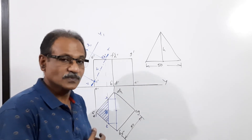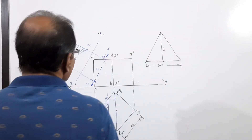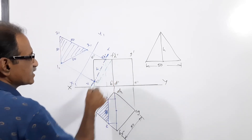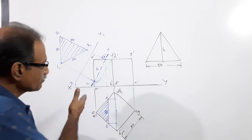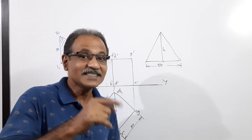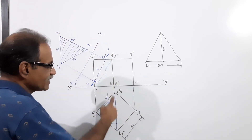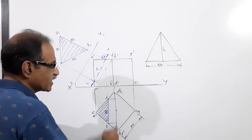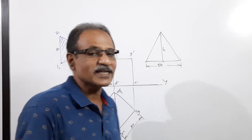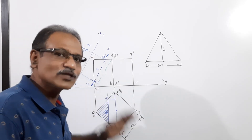Now there is another option — listen carefully. If you draw a cutting plane connecting A' to F' to H', what do you get? If the cutting plane passes through A', F', and H', the true shape is an equilateral triangle of side 50√2, since the side of the cube is 50 and this face diagonal is 50√2. Any cutting plane parallel to that green line will also give equilateral triangles.